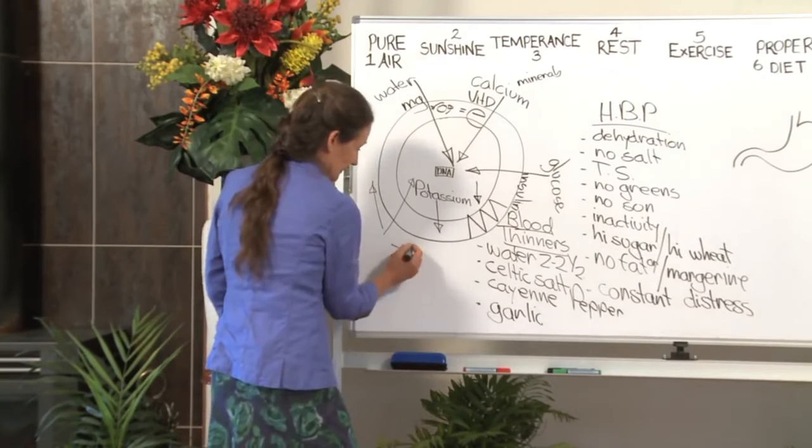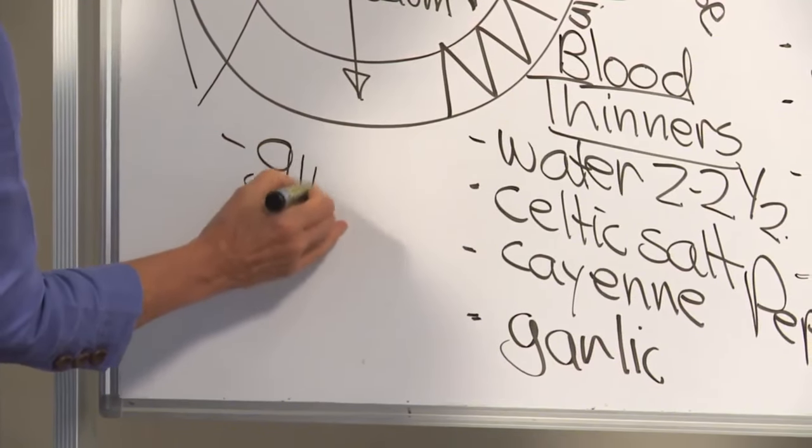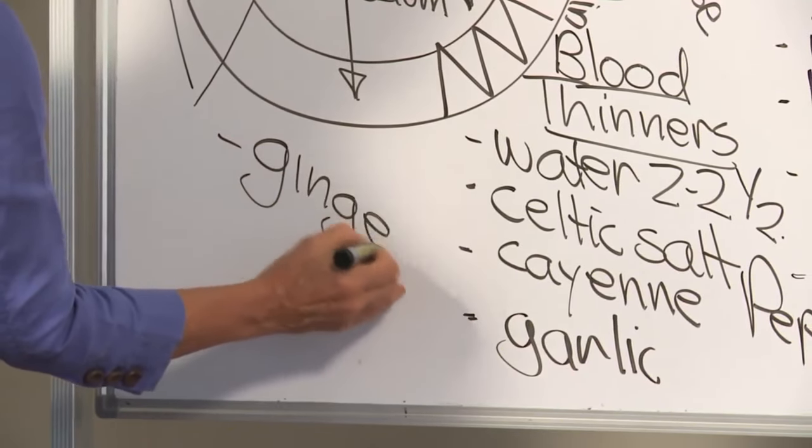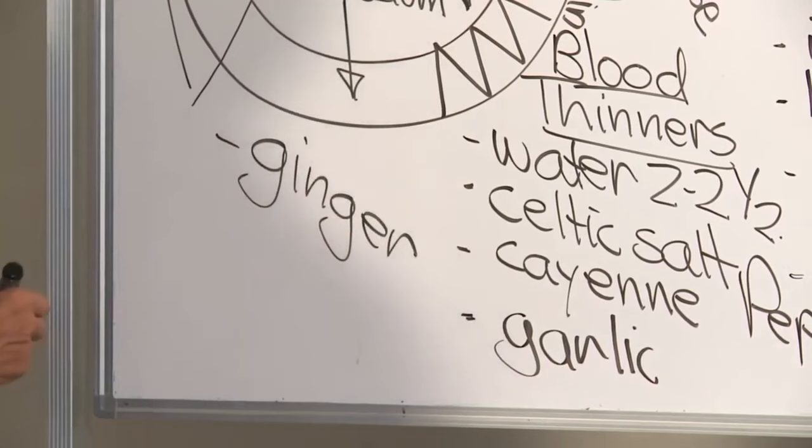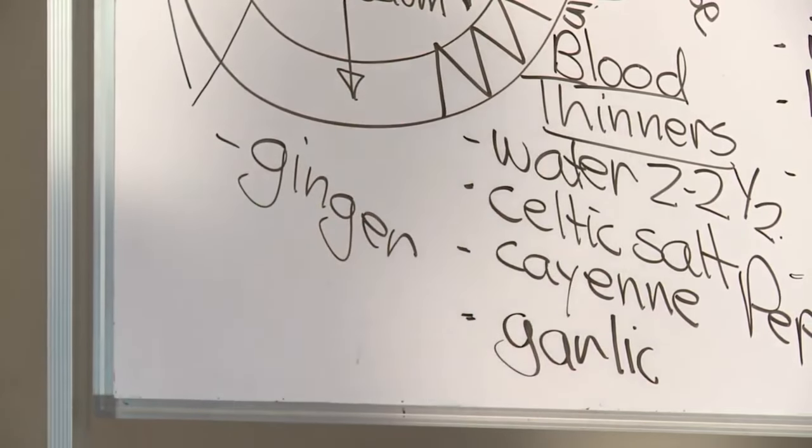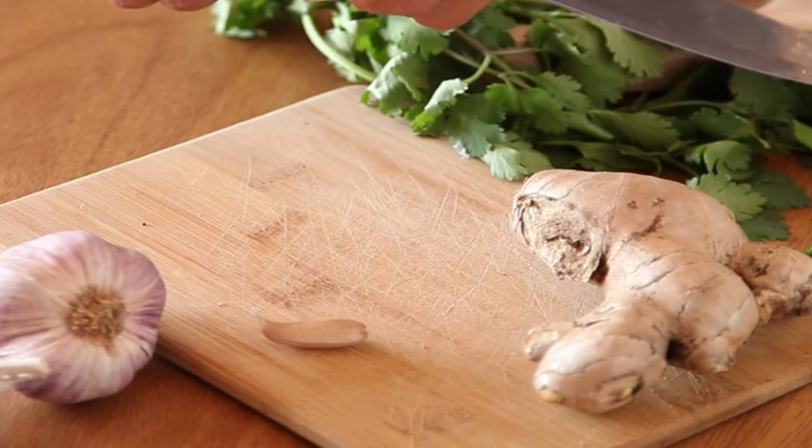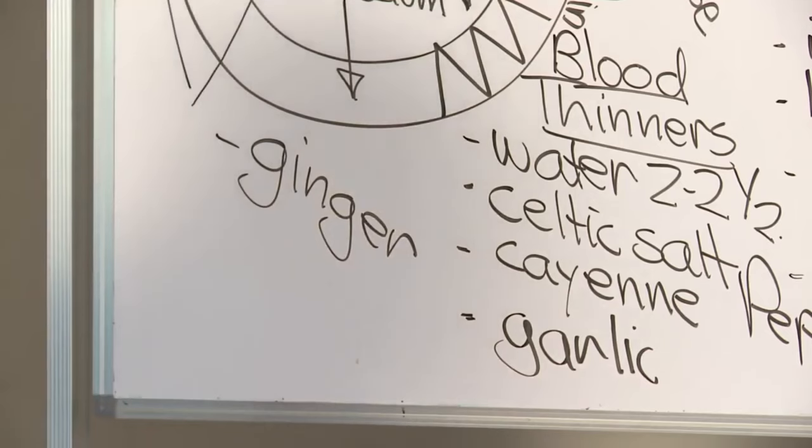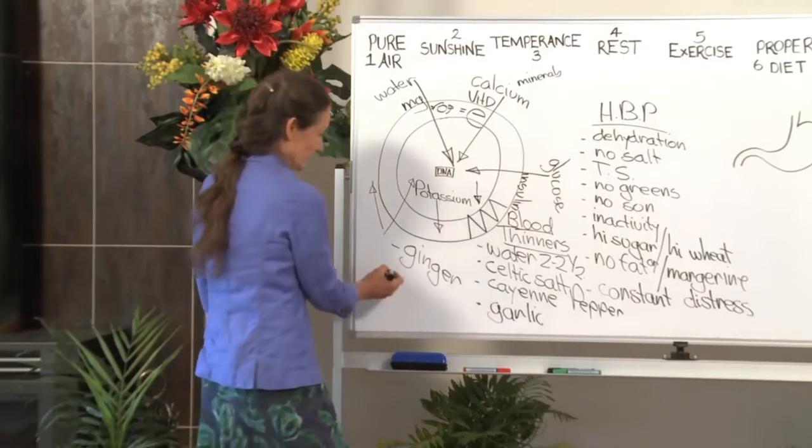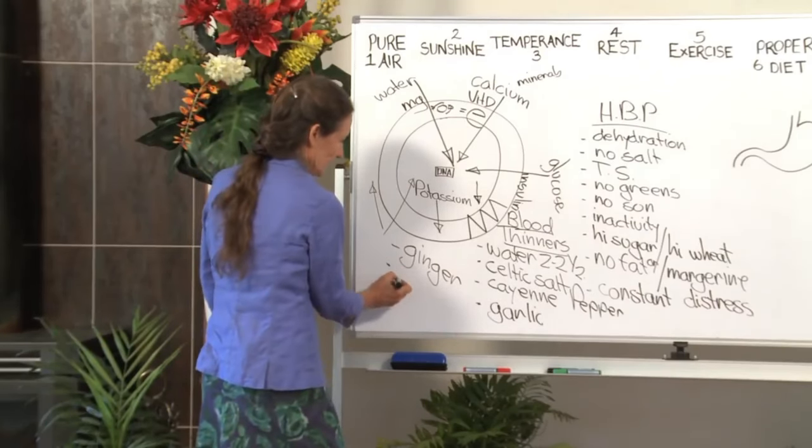Another blood thinner is ginger. Ginger's a remarkable herb. It's a potent anti-inflammatory herb, but it also is a blood thinner. So you can grate some ginger, pour boiling water on it, delicious tea. Or you can put it in all your stir fries, put it in every legume dish, delicious. And yet it's thinning your blood.